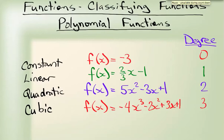Let's classify some polynomial functions. But first, we should know exactly what a polynomial function is. A function is considered a polynomial if its powers on X are non-negative integers — the power on X has to be a non-negative integer.